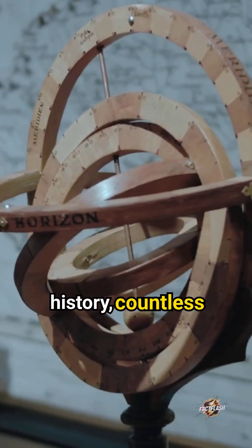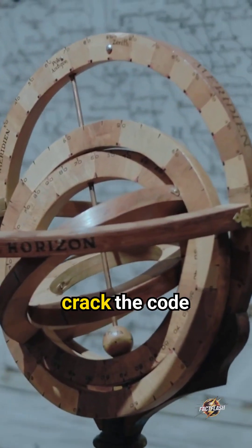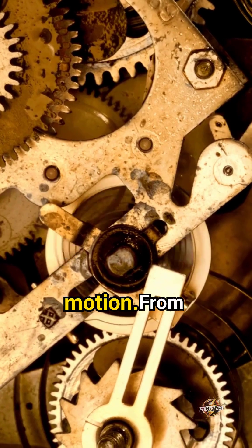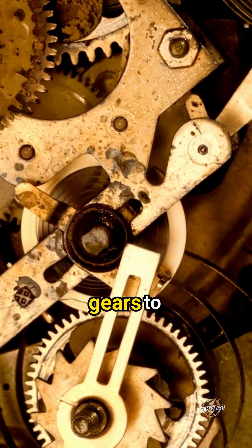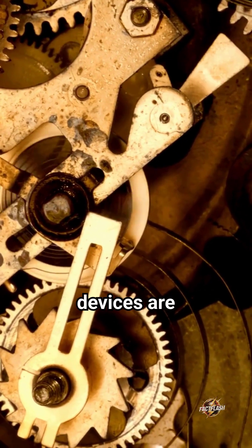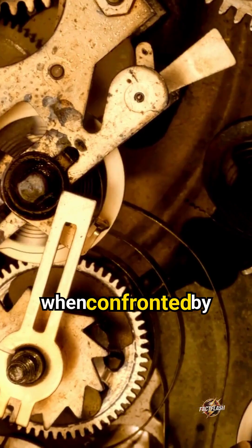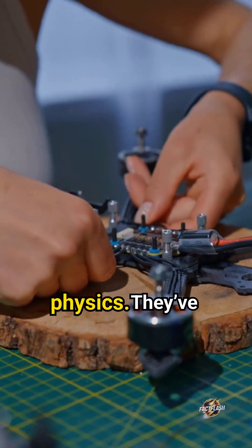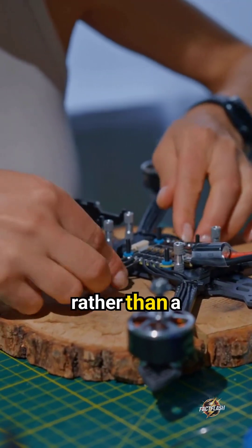Throughout history, countless inventors have tried to crack the code of perpetual motion. From overcomplex gears to self-propelling wheels, these devices are ingenious, but fail when confronted by the laws of physics. They've served as a lesson rather than a breakthrough.